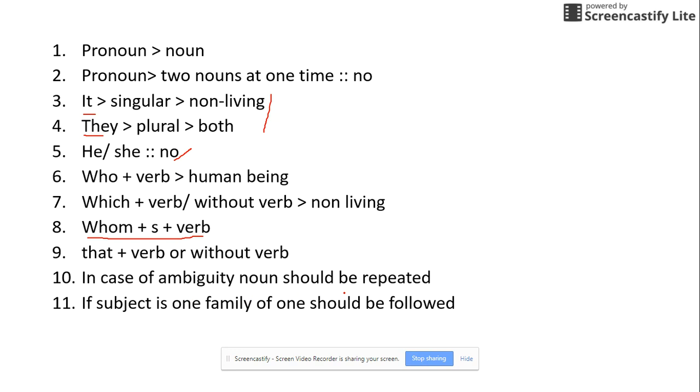Next important point: if a sentence uses one as a subject, the family of one should be followed, like one, one's, oneself, or you, your, yours, or they, their, them. That's called the family - it should be followed. So these are some important points for pronouns.